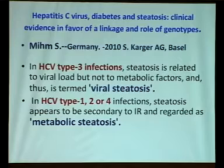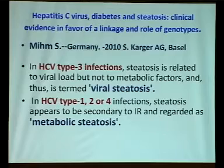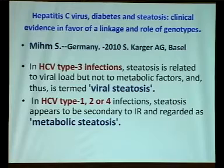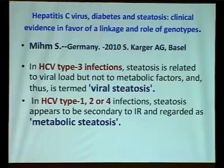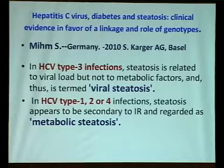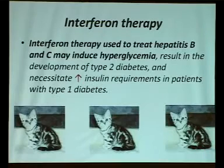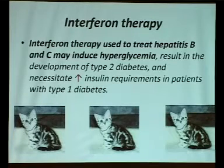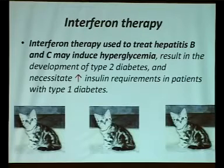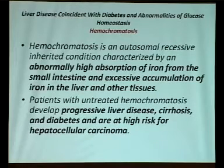There are two types of steatosis: viral steatosis and metabolic steatosis. A 2010 study showed that in hepatitis C virus genotype 3 infection, steatosis is mainly due to viral-related factors — called viral steatosis. In HCV types 1, 2, and 4, steatosis is mainly due to metabolic factors — called metabolic steatosis. Interferon therapy for hepatitis C virus infection may lead to hyperglycemia, increasing insulin requirements in patients with type 1 diabetes.